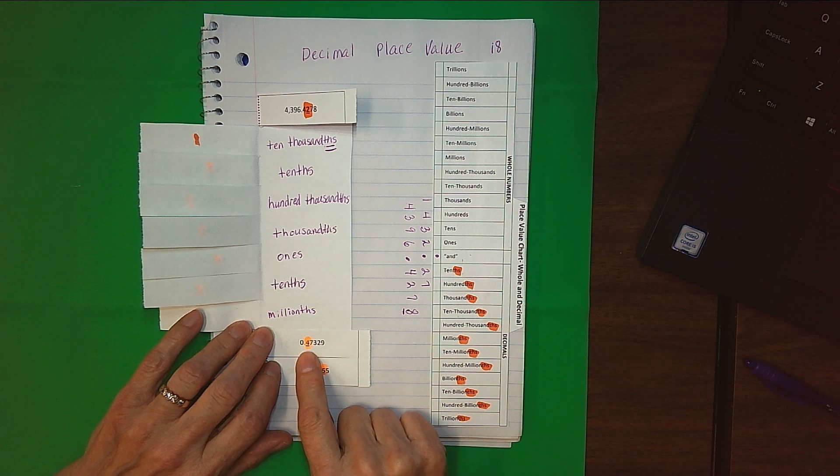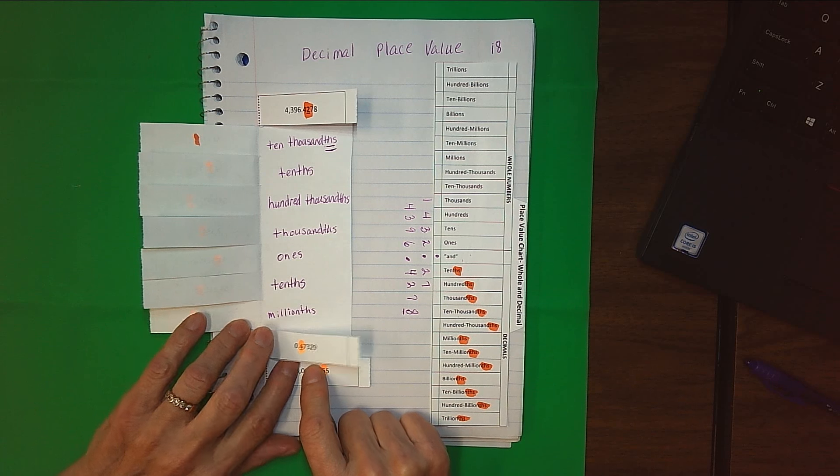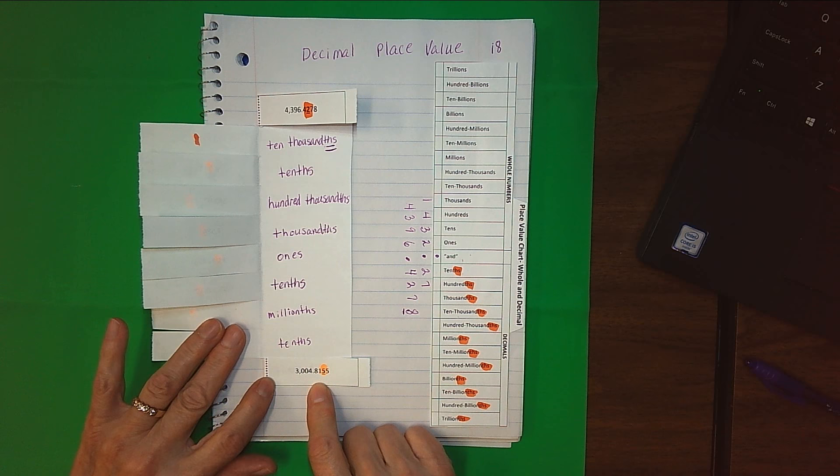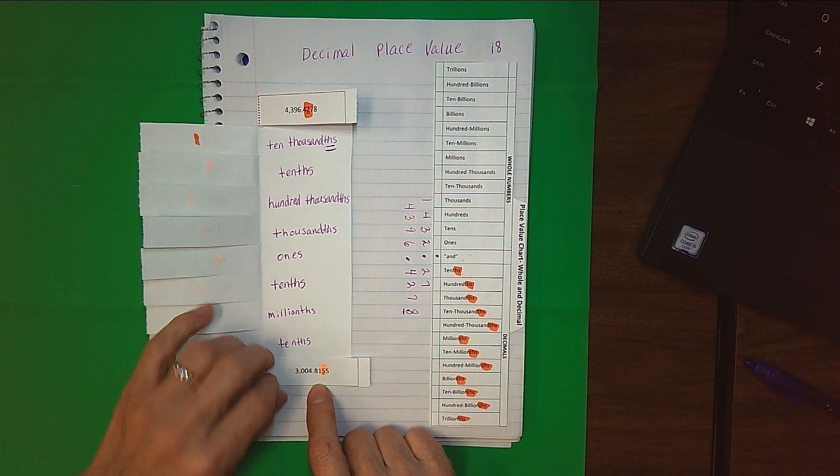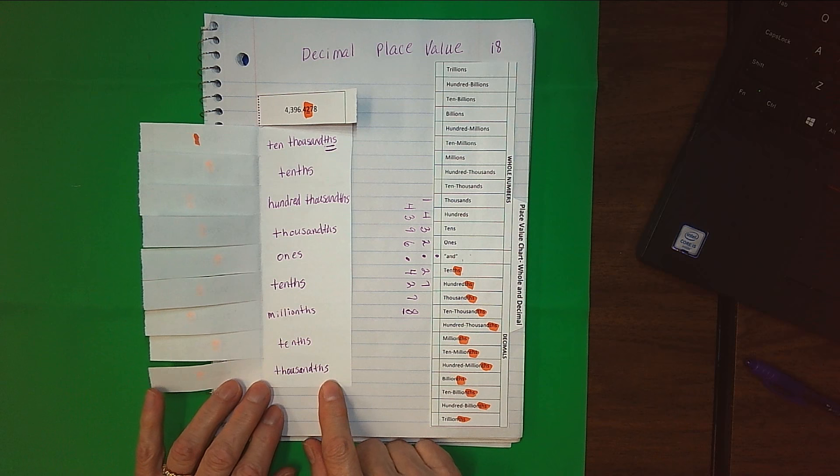Nice easy one here. One spot after the decimal point, in the tenths place. And then finally, three spots away from the decimal point, the thousandths place.